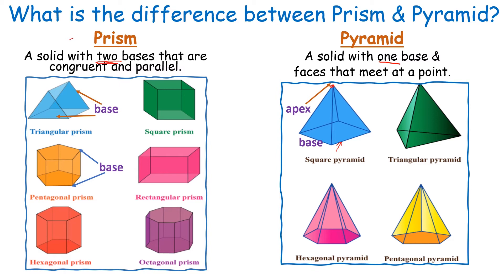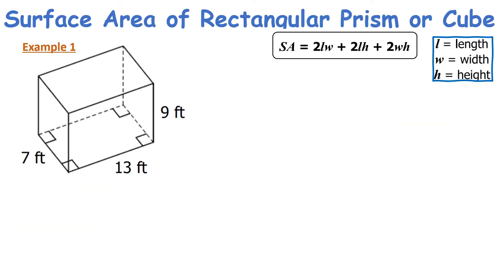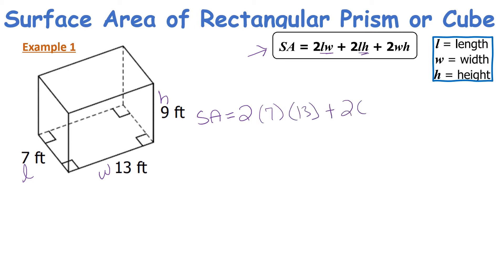Let's take a look at the surface area of a rectangular prism or cube — it uses the same formula. We label everything: length is 7 feet, width is 13, and height is 9 feet. Plugging into the formula: surface area equals 2 times L times W, which is 7 times 13, plus 2 times L times H, which is 7 times 9, plus 2 times W times H, which is 9 times 13.